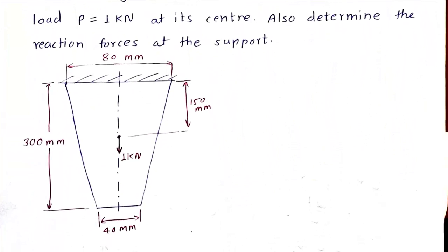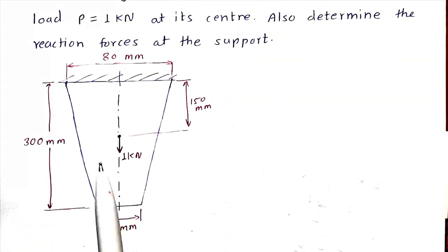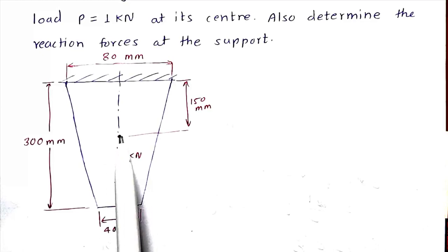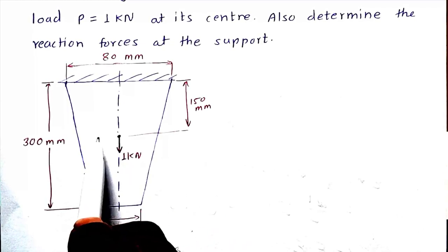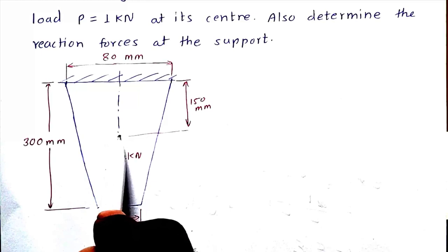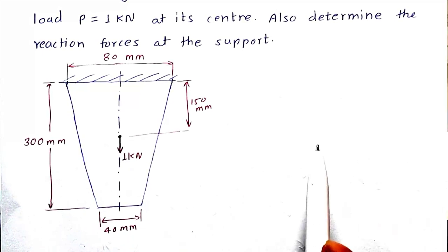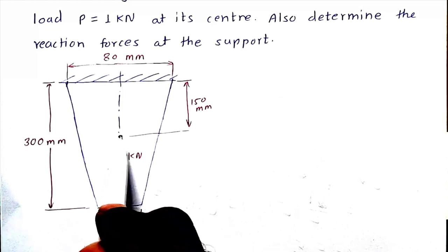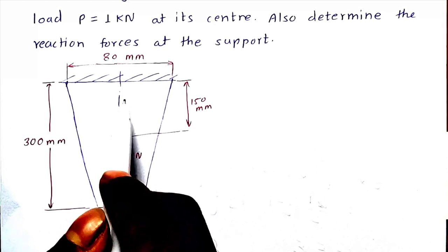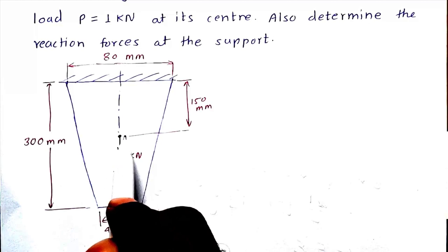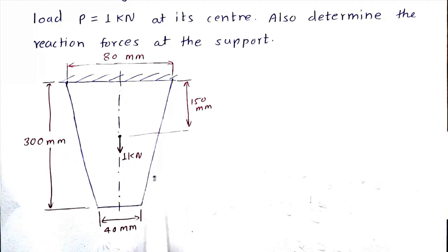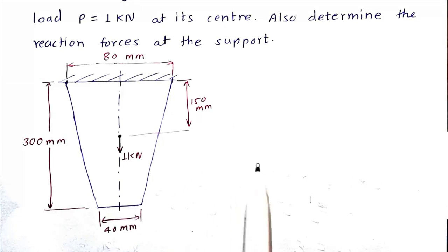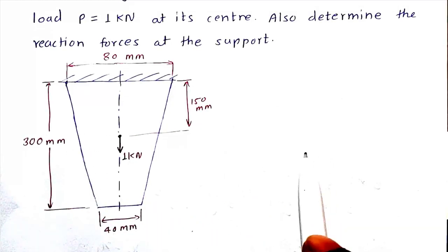This is the diagram for the given problem. The 1 kN load is applied at the center, so we have to create two elements. Wherever the point load is, there should be a node. So we create one element on the upper side and one at the bottom side. But we have a tapered cross section, and the rule is that the area of cross section should be constant throughout each element. So we have to convert this tapered section into a step bar.